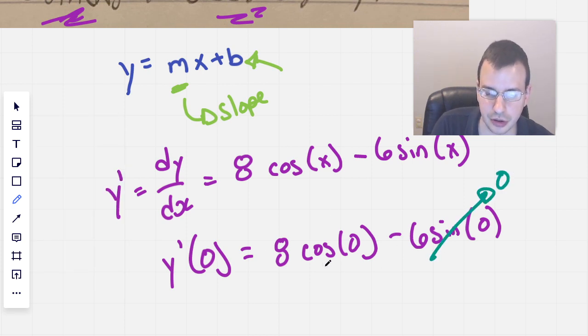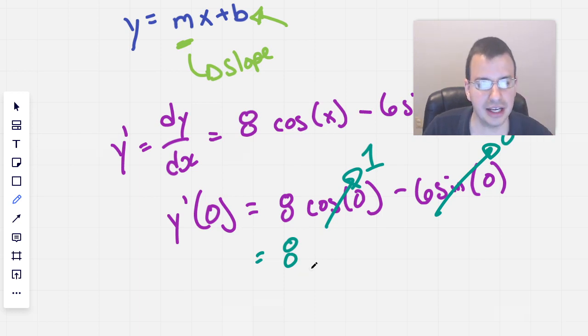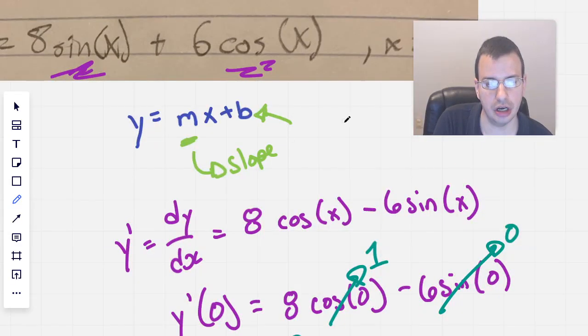This will go to zero, because sine of zero is zero. This will go to one, because cosine of zero is one. And so we know that the y prime at zero is eight. So that gives us that our slope at this point is eight.